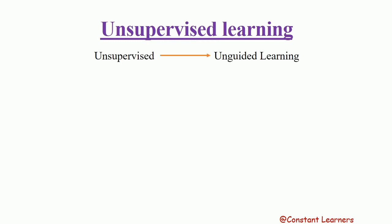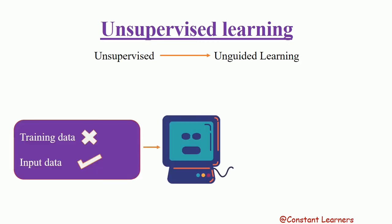Unsupervised learning, as the name says, is an unguided form of learning. Here, no training data is given to the computer. Rather, the machine is only fed with input data — there is no output data. We know that training data had both input and output, but here the machine is being fed with only the input.